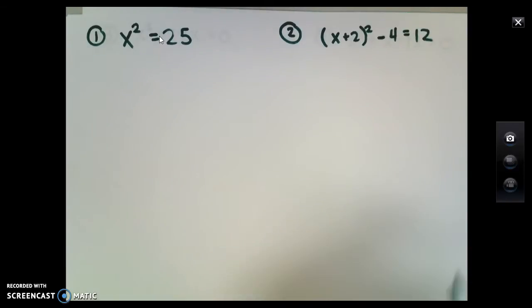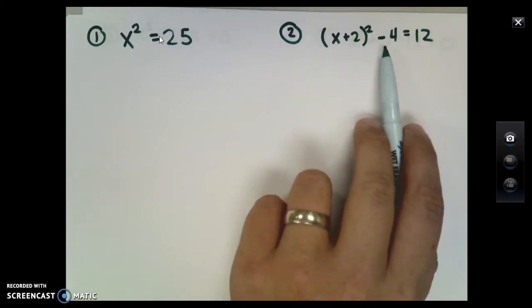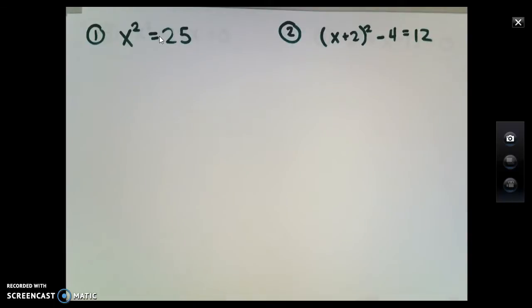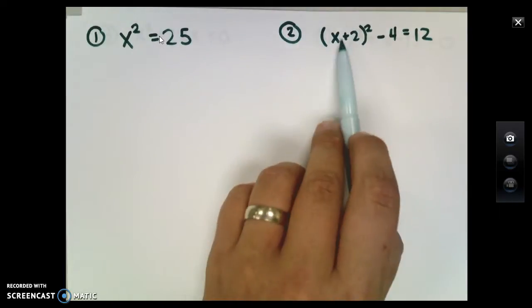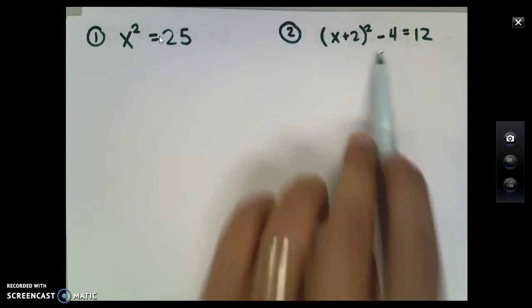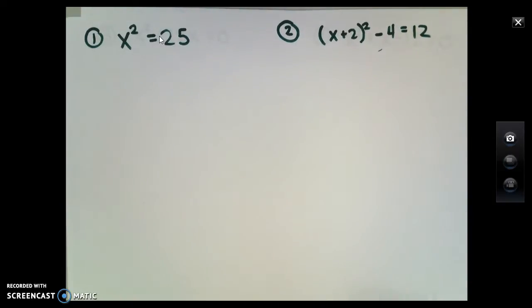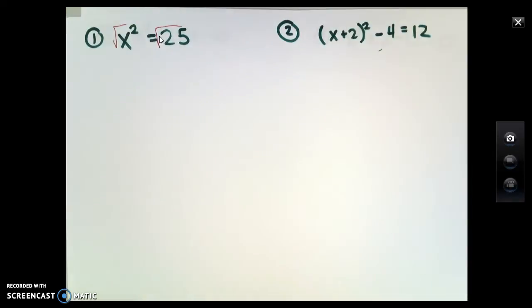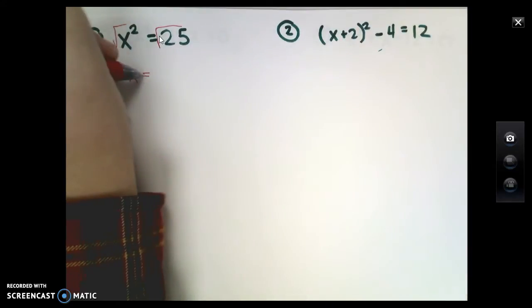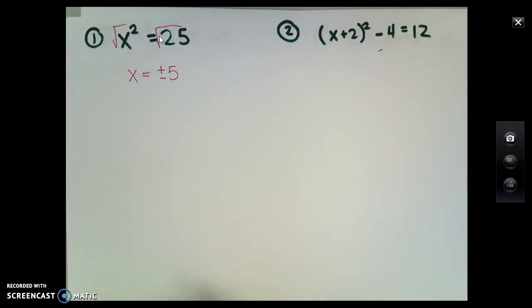x squared equals 25. Isolating the variable works when you have a single x term, and when you solve this, you can use square roots. In this problem, I can take the square root of both sides and that allows me to say that x equals 5 but also negative 5, and that's our solution.